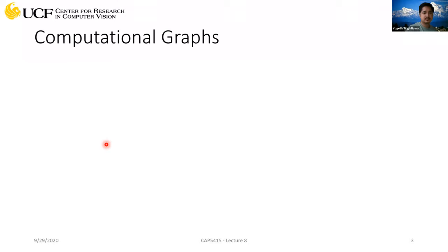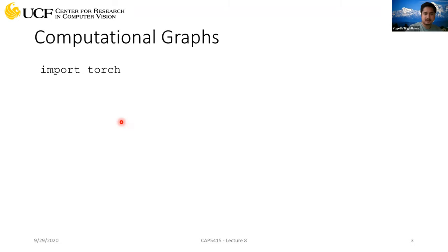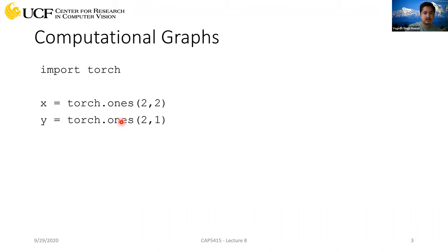Last week we were looking into how we can implement CNNs using PyTorch. We saw how we can use variables, how we can define tensors which we can use to do computation on GPUs. We also looked into computational graphs, which are really important because whatever network you are going to design to train on your data, all of those networks can be represented in form of a computational graph.